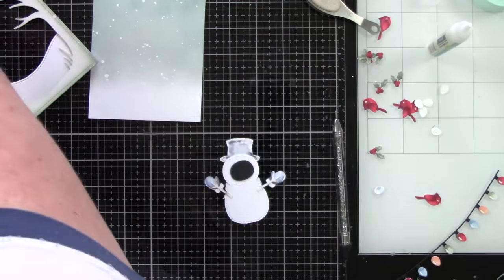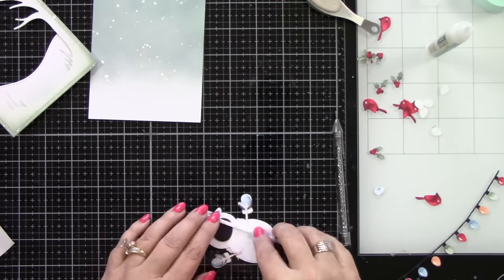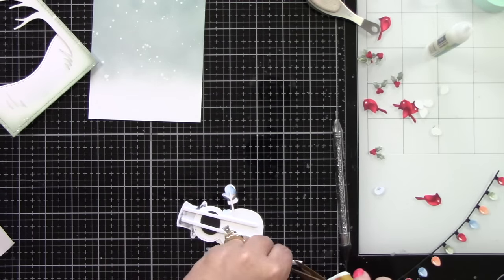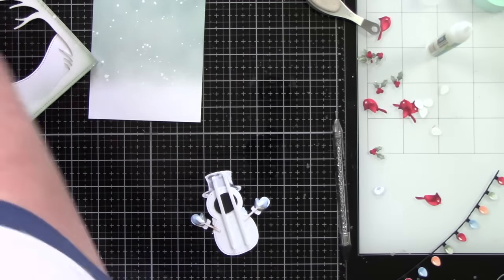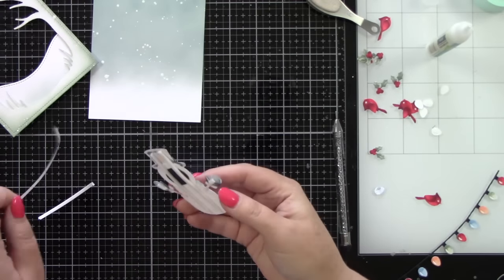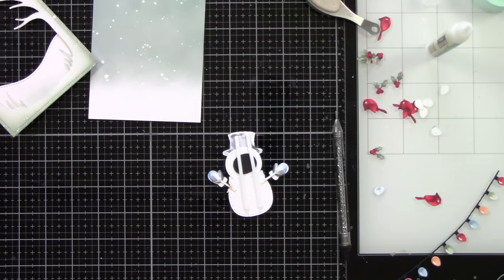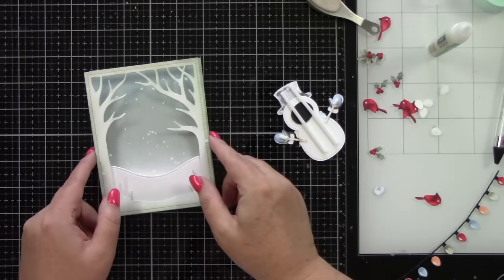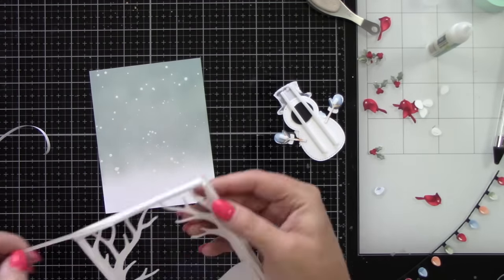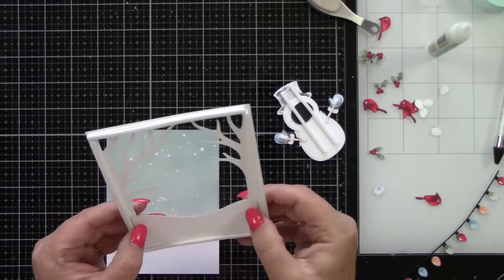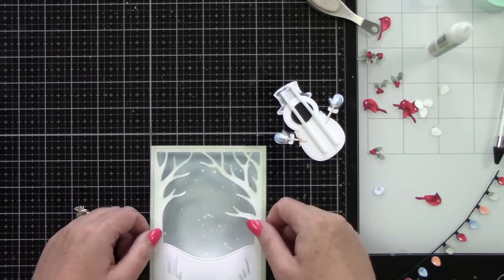Then I'm going to add one layer of foam tape behind him. So he will be, his layering will be just as deep as the hillside, but I'm going to tuck him behind the hillside. So it looks like the bottom of him is kind of buried in the snow. Let's put our front and back piece on together and then we can start putting the rest of our elements together for this super cute card.